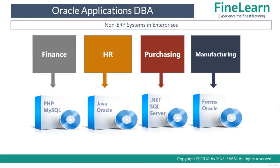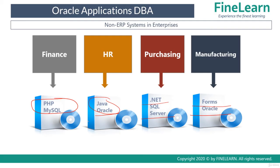Let's say for example I have a finance department in my organization, and to manage the finance-related details in my company, I use a software built using PHP and MySQL. And to manage the HR part of my business — for example, to manage employee records and payroll — I use a software built on Java with an Oracle database. And for purchasing, I use a software built on .NET with a SQL Server database. And finally, for the manufacturing department, I use a software built on Oracle Forms with an Oracle database. As you can see, there are different softwares using different technologies to manage all the business functions of your enterprise.